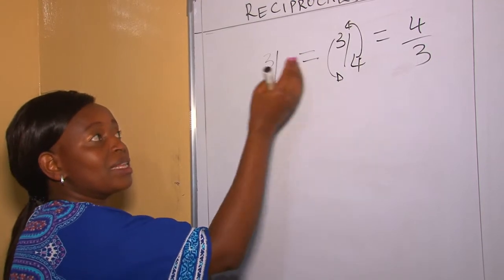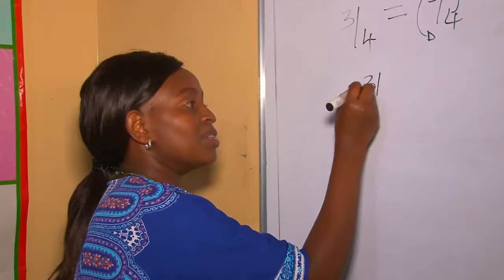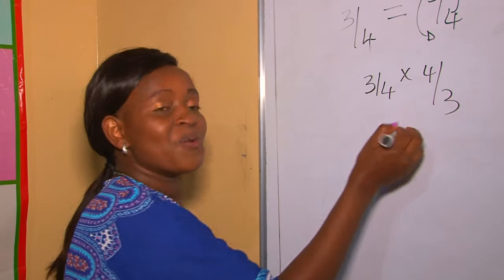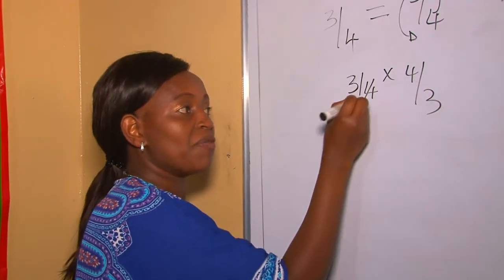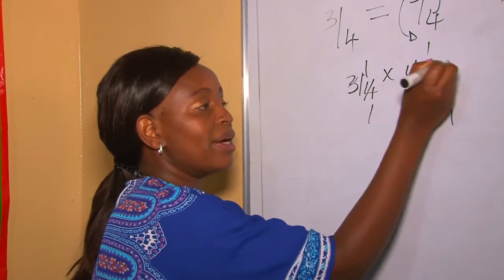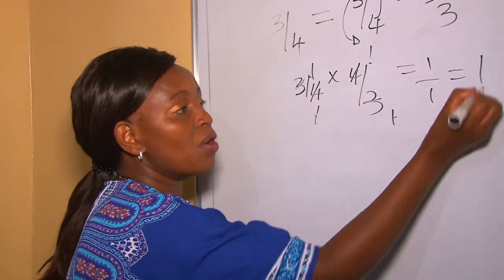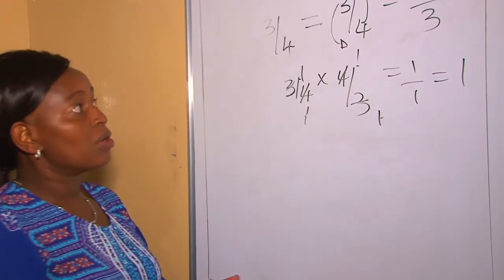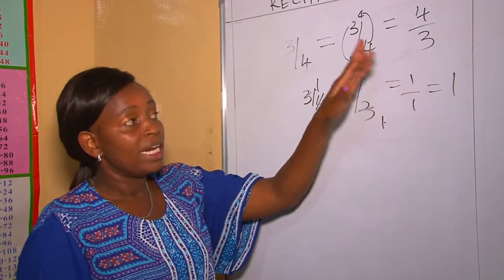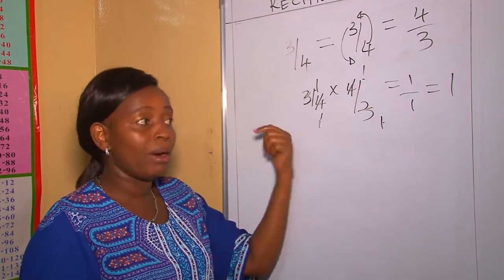Such a way that when you multiply the number with its reciprocal, you get one. Let's prove this. When you cross multiply, three-quarters by four-thirds, one times one is one and one times one is one. Therefore the reciprocal of three quarters is four over three, and we have proved that multiplying a number by its reciprocal always gives one.